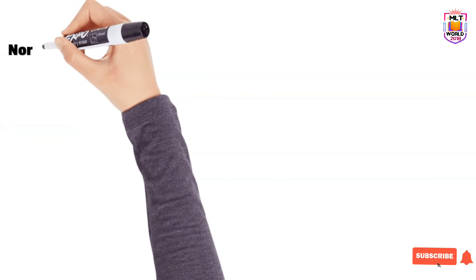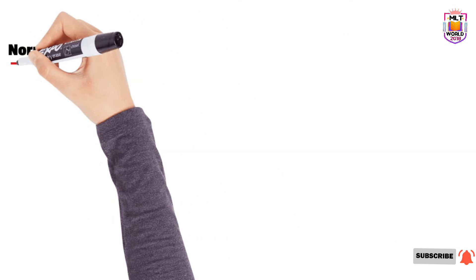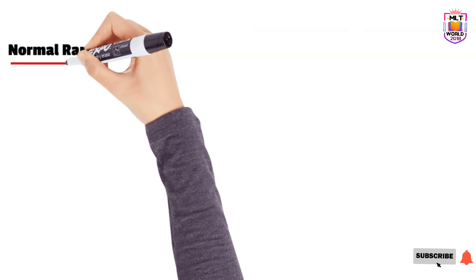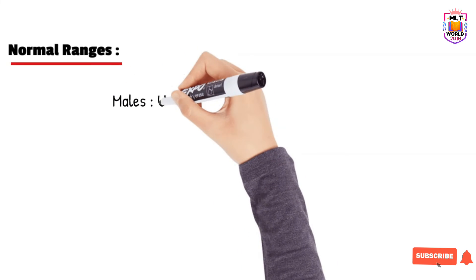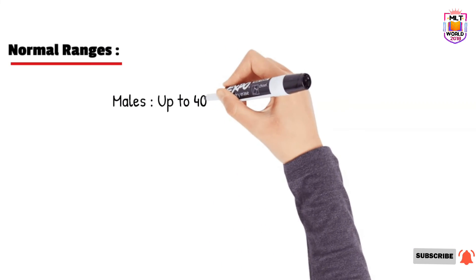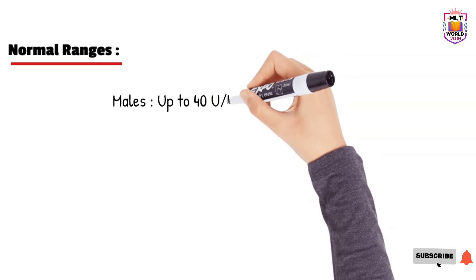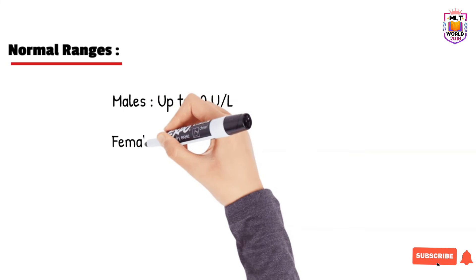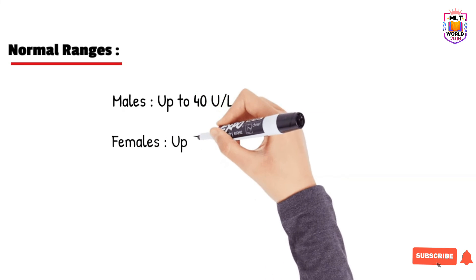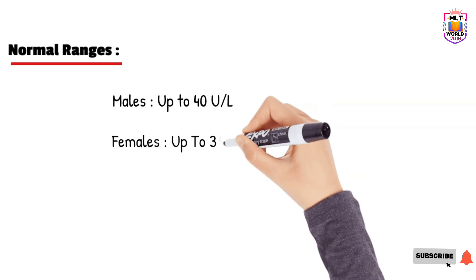The normal range can vary from lab to lab. In general, for males, up to 40 units per liter is normal — above 40 U/L may indicate liver disorder or disease. For females, up to 36 units per liter is normal.